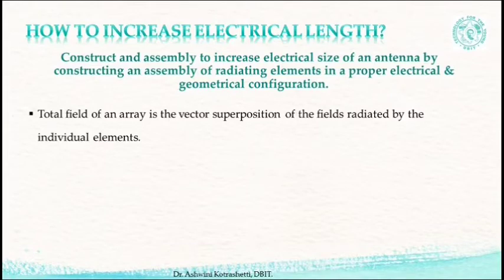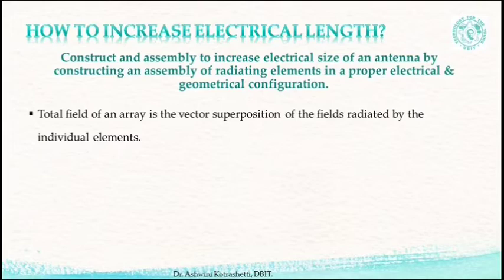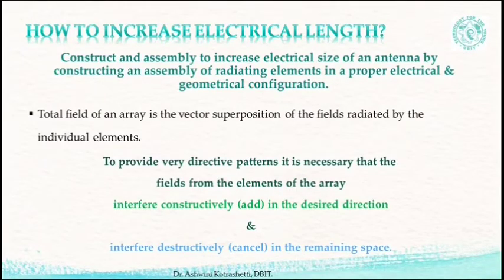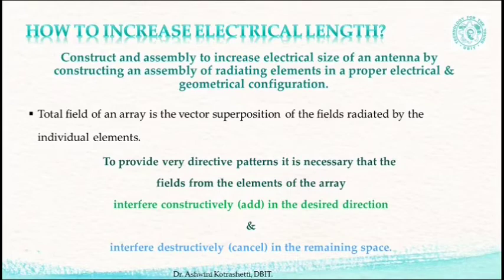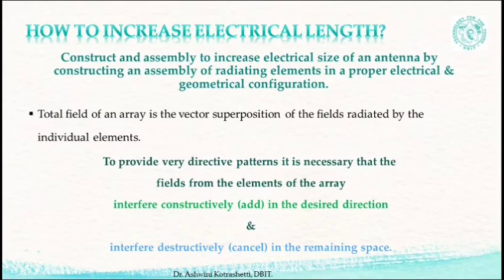The total field of an array is the vector superposition of the fields radiated by the individual elements. This assumes that the current in each element is the same as that of the isolated elements. To provide very directive patterns, it is necessary that the fields from the elements of the array interfere constructively — that is, add in the desired direction — and interfere destructively to cancel each other in the remaining space.